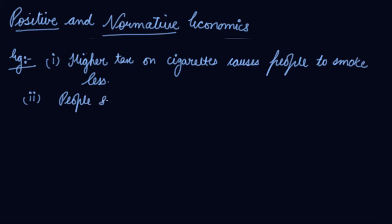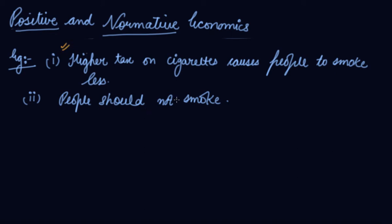And the second statement is: people should not smoke. Now, the first statement simply describes what happens if a tax is imposed on cigarettes and how it happens. No opinion is expressed on smoking, whether it is good or bad. In the first statement, taxes are the cause that will reduce smoking, so there is no judgment.